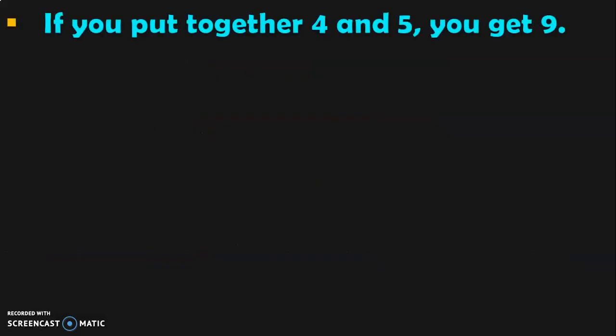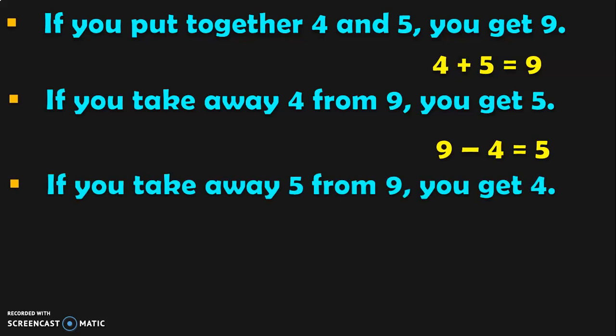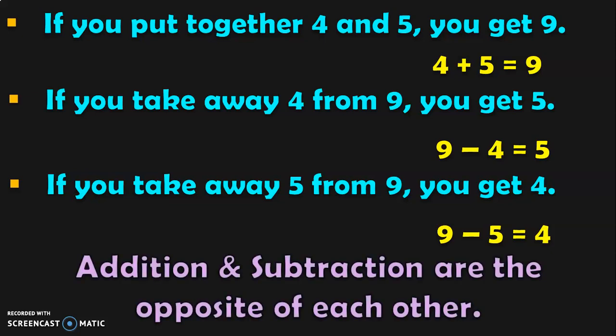If you put together 4 and 5, you get 9. That is, when you add 4 plus 5, you get 9. If you take away 4 from 9, you get 5 — that is, 9 minus 4 is equal to 5. If you take away 5 from 9, you get 4 — that is, 9 minus 5 is equal to 4. This shows that addition and subtraction are the opposite of each other.